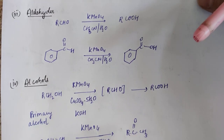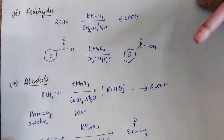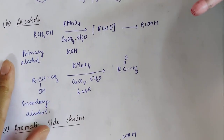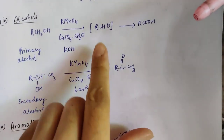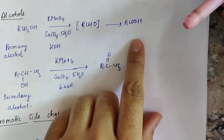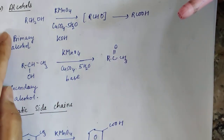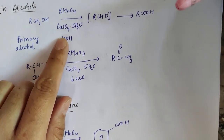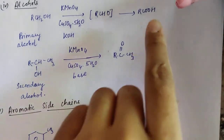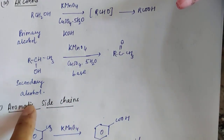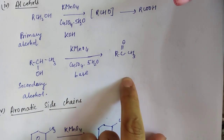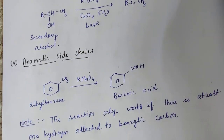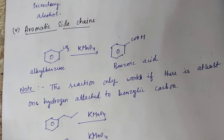If we carry out the reaction of aldehyde with KMnO4, aldehyde gets converted into carboxylic acid. For alcohols, the compound first gets converted into aldehyde then gets oxidized to carboxylic acid. But in case of alcohols a potassium salt is present. Primary alcohol gets converted into carboxylic acid; secondary alcohol gets converted into a ketone group only.